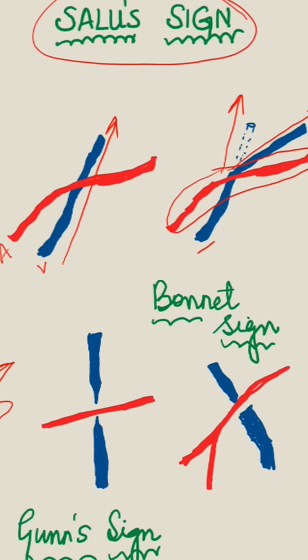The next sign is the Gunn sign. In the Gunn sign, as the thickened arteries pass over the veins, the veins become narrowed in the part where the arteries have compressed them. These narrowed parts represent the Gunn's sign.